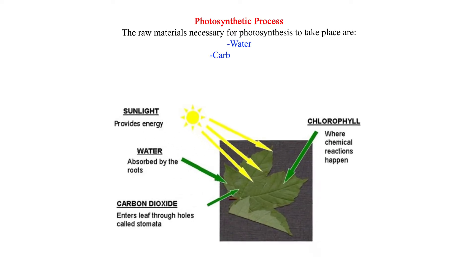Photosynthetic process: The raw materials necessary for photosynthesis to take place are water, carbon dioxide, light energy, and chlorophyll.